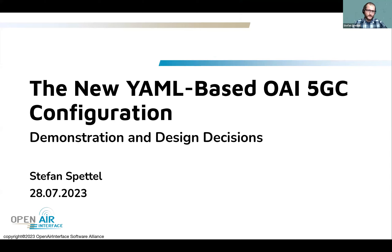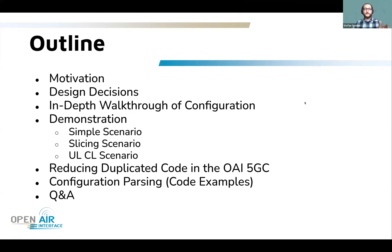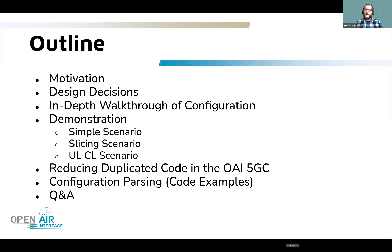We will talk today about the YAML configuration and especially about the design decisions — why we did what we did. I will also make a demonstration of the new configuration. The outline for today covers motivation, design decisions, a walkthrough of the configuration, three scenarios with the OEI core network — a basic one, a slicing scenario, and an uplink classifier scenario — and then reducing duplicated code in the OEI 5GC.